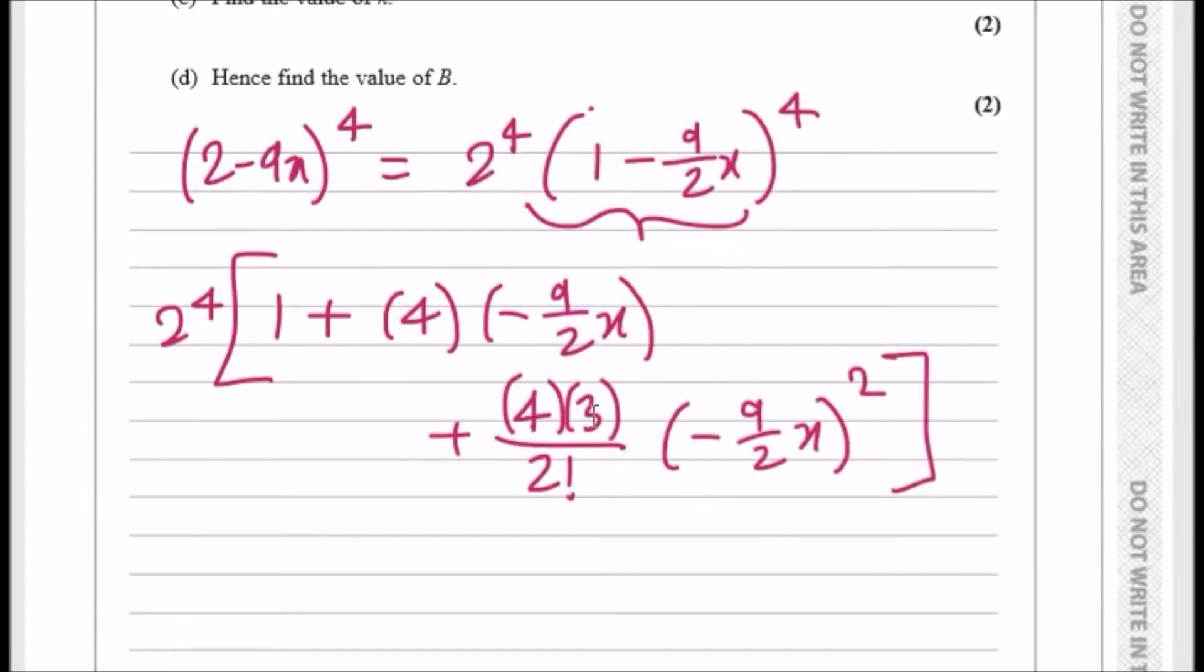Now all we do is just expand this and tidy up. So all we do now, do one term at a time. So for the first term it'll be 2 to power 4 times 1, which is 16.